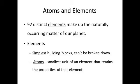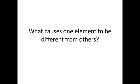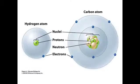The atom is the smallest unit of an element that still retains the properties of that element. Another way of thinking about this is to realize that each element has its own type of atoms. This returns us to our original question: What causes one element to be different from others?